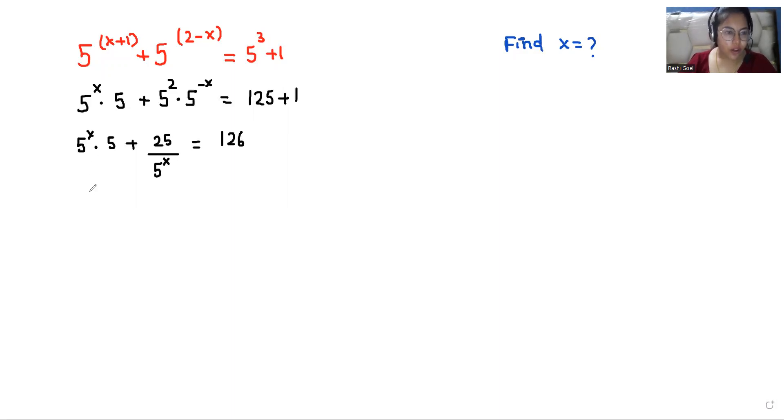Now 5^x I'll take it as y. So I'm assuming it and replacing it with y. So here 5y plus 25 over y minus 126 equals 0.